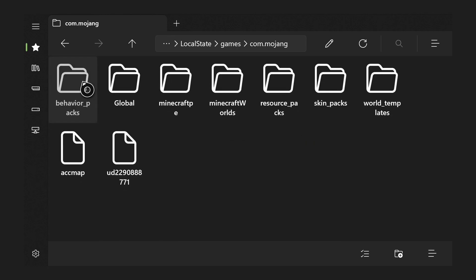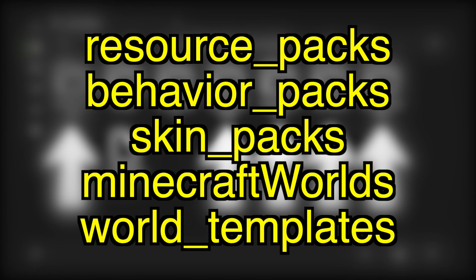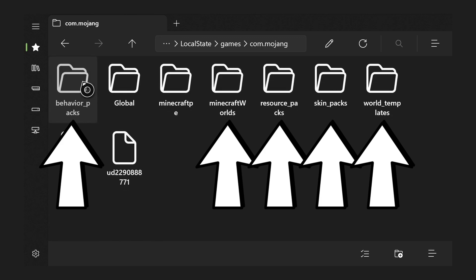Open up your com.mojang folder — it will be empty, and that's okay. This is actually the proper place where you put the folders for your add-ons: behavior packs, resource packs, all of that. Inside com.mojang, create all of these folders separately — not inside each other: resource_packs for texture packs, behavior_packs for mods, skin_packs for skin packs, minecraftWorlds for your worlds, and world_templates for templates. They are all case-sensitive, all lowercase except minecraftWorlds which has a capital W.